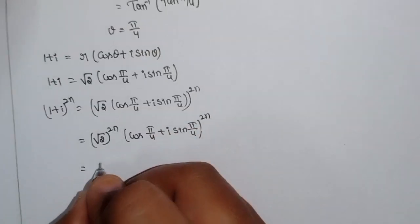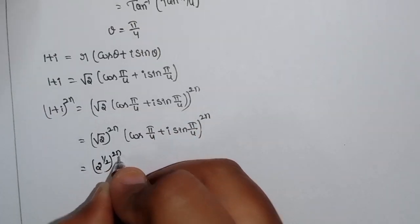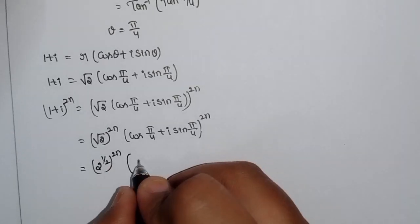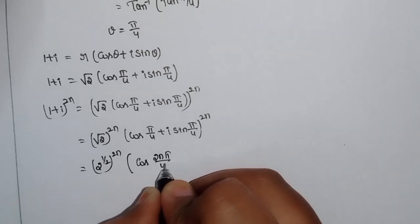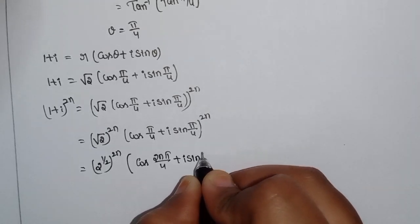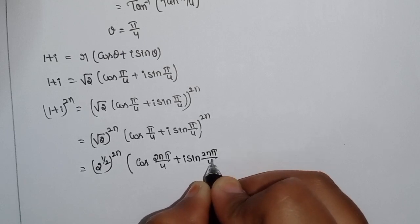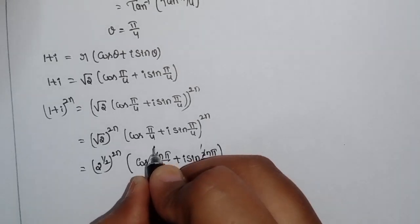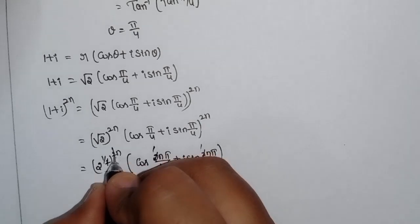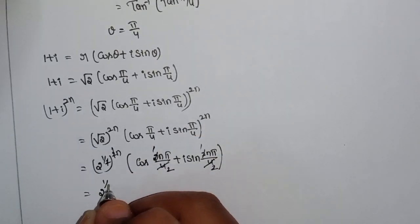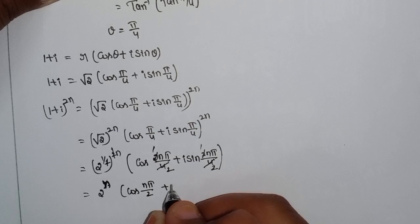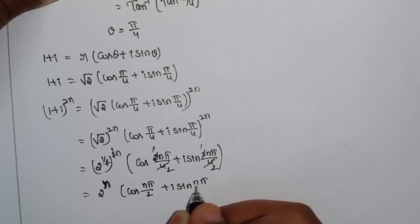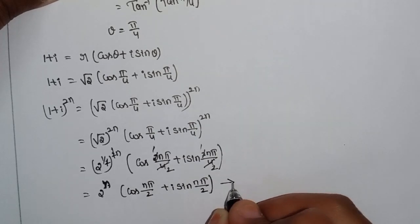Since (√2)^2n = (2^(1/2))^2n = 2^n. Applying De Moivre's theorem: multiply the angle by 2n — (2n · π/4) = nπ/2, the 2s cancel. So (1+i)^2n = 2^n · (cos(nπ/2) + i sin(nπ/2)). This is Equation 1.